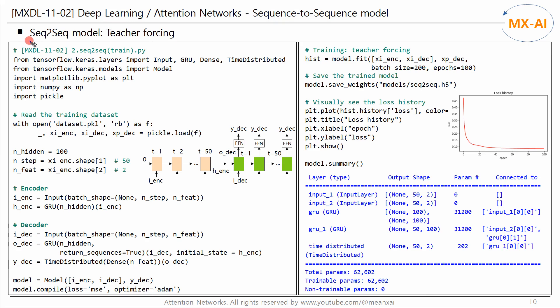Now let's build a sequence-to-sequence model and train it with the training dataset generated in the previous code. The RNN Encoder-Decoder model proposed by Kyunghyun Cho et al. in 2014 used GRU, so we will also use GRU. We read the saved training dataset, using only the input data to the encoder and decoder and the output data of the decoder. The number of neurons in the recurrent layer is set to 100.